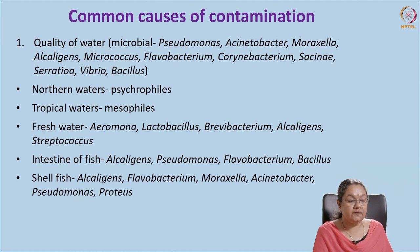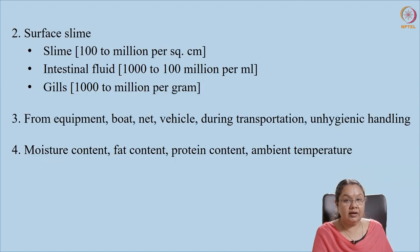In freshwater fish we generally find Aeromonas, Lactobacillus, Alcaligenes, Streptococcus, etc. Shellfish also harbor similar kinds of microbes, and apart from the usual ones we also see Proteus, Acinetobacter, Moraxella, etc. The surface slime, the gills, and the intestinal fluid are the main places where microbial loads are very high.